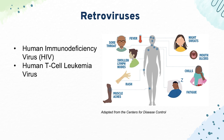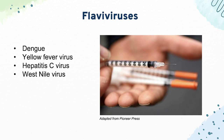Next, we have the flaviviruses. The first is dengue — the vector is the Aedes mosquito — and it can cause either dengue fever or dengue hemorrhagic fever, which adds thrombocytopenia and significant bleeding. We also have yellow fever virus, which isn't tested too often. Then hepatitis C virus, often transmitted through blood or infected needles, can progress to liver cirrhosis or cancer because it has a very common carrier state.